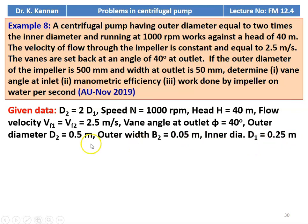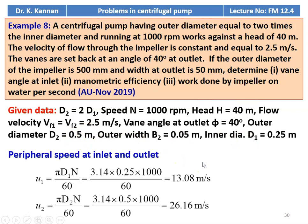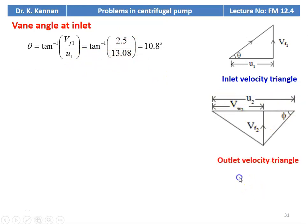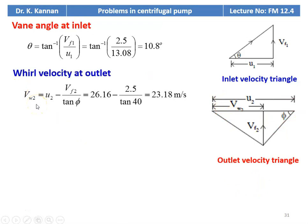Peripheral speed at the inlet: U1 equal to pi D1 N divided by 60: 3.14 into 0.25 into 1000 divided by 60 equal to 13.08 meters per second. U2 equal to pi D2 N divided by 60: 3.14 into 0.5 into 1000 divided by 60 equal to 26.16 meters per second. From the inlet velocity triangle, theta equal to tan inverse of VF1 by U1: tan inverse of 2.5 divided by 13.08 equal to 10.8 degrees. From the outlet velocity triangle, VW2 equal to U2 minus VF2 by tan phi: 26.16 minus 2.5 divided by tan 40 equal to 23.18 meters per second.